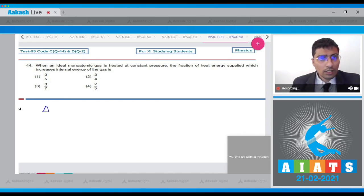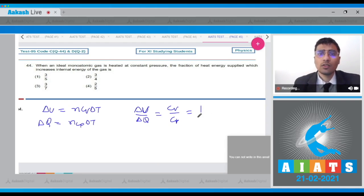This student, ΔU is given as n·Cv·ΔT, and at constant pressure ΔQ is given as n·Cp·ΔT. We have to find out the value of ΔU by ΔQ.